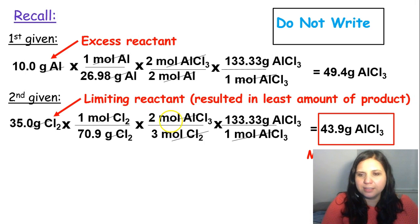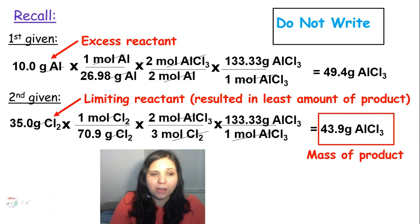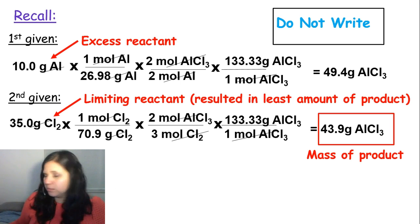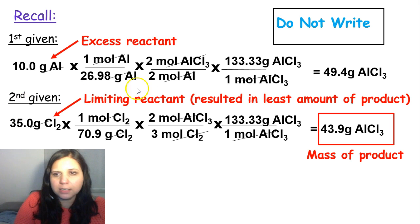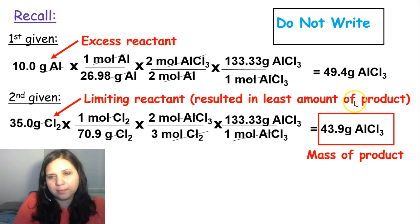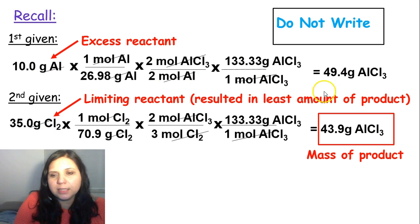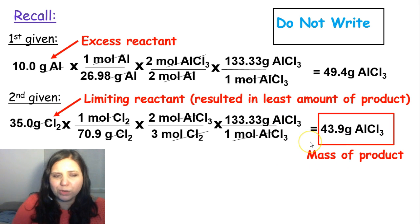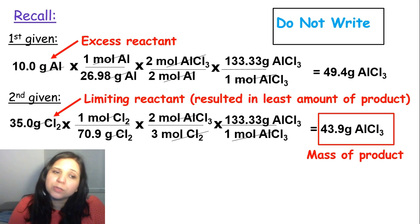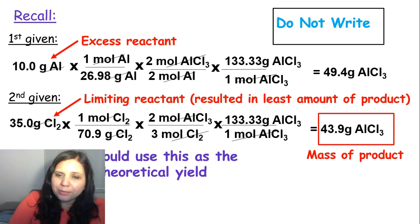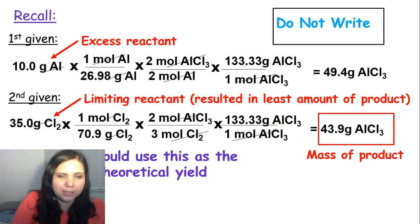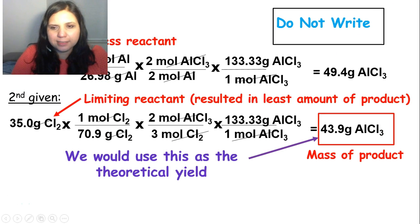To illustrate, recall the aluminum and chlorine example from the last set of notes. Aluminum gave one amount of aluminum chloride and chlorine gave another; the smaller number was chosen as the mass of the product because it's the most product you can actually make. If doing a percent yield problem with two reactants, that smaller value would be your theoretical yield.